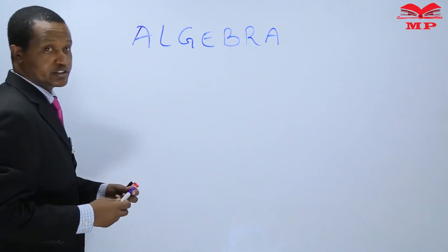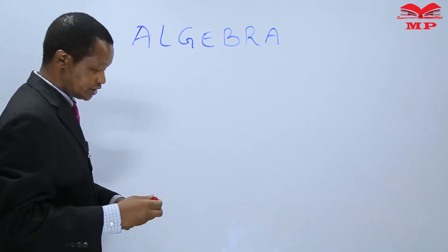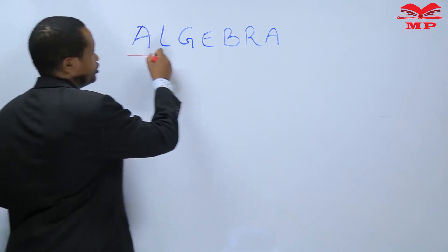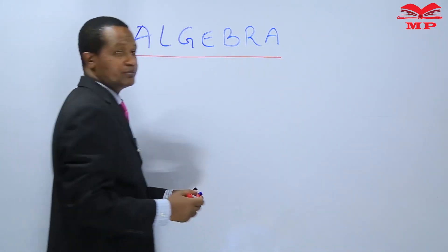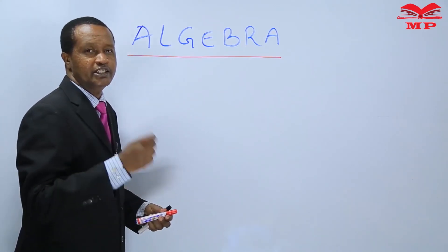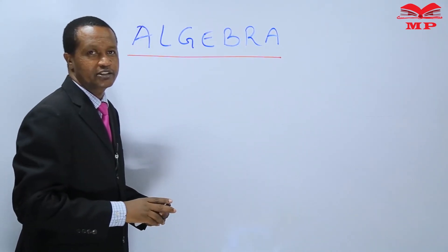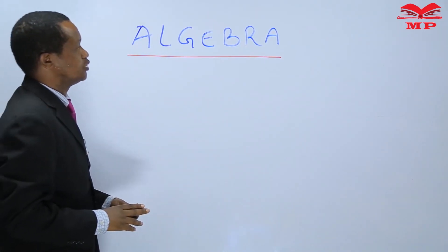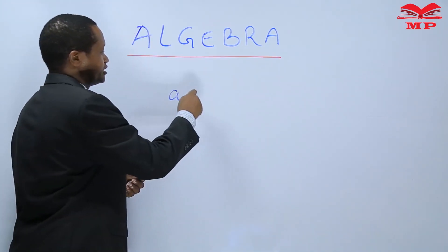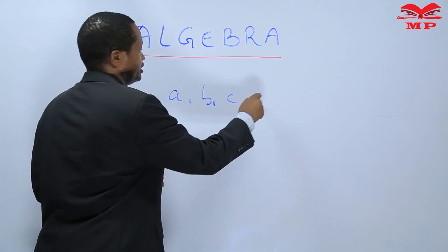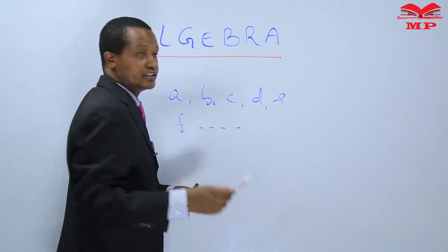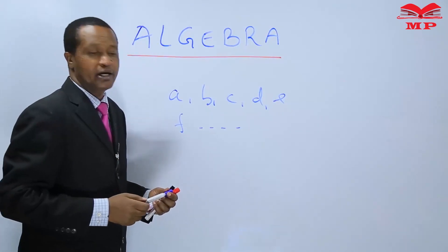This is not the first time you are hearing this word. You learned this in Standard 4, where we say that sometimes letters can be used instead of numbers. Algebra is where we use letters — letters like A, B, C, D, E, F and so on — instead of numbers.